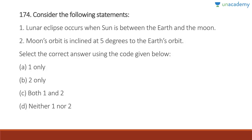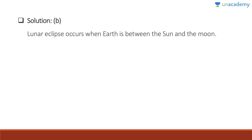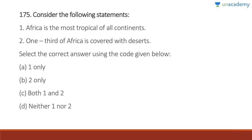Question 174: Lunar eclipse occurs when the sun is between the Earth and the moon — wrong; lunar eclipse occurs when Earth is between the sun and the moon. Moon's orbit is inclined at 5 degrees to Earth's orbit — correct. Answer is B, two only.